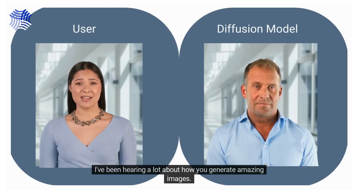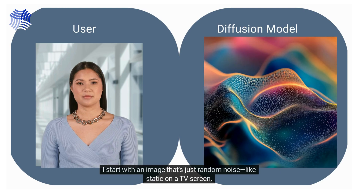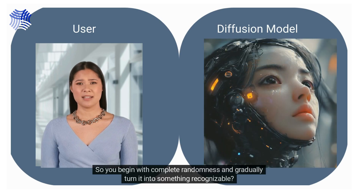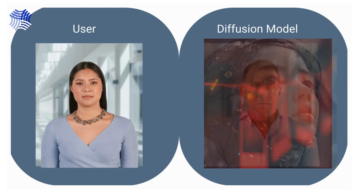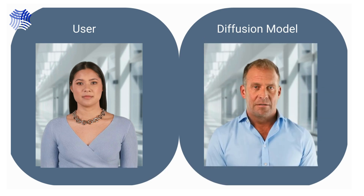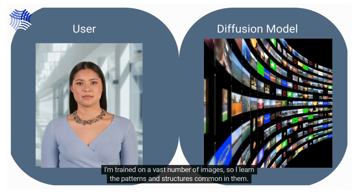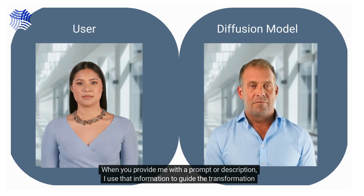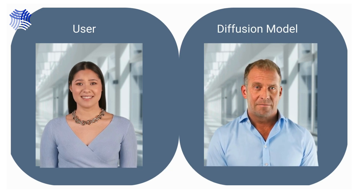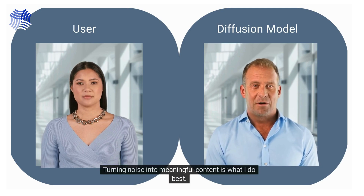User: 'I've been hearing a lot about how you generate amazing images. Can you explain how you work in simple terms?' Diffusion Model: 'I start with an image that's just random noise, like static on a TV screen. Then, step by step, I refine this noise to create a meaningful image.' User: 'So you begin with complete randomness and gradually turn it into something recognizable?' Model: 'Exactly. Think of it like developing a photograph in a dark room — the image slowly emerges from the initial blur as I process it through multiple stages.' User: 'How do you know what the final image should look like?' Model: 'I'm trained on a vast number of images, so I learn the patterns and structures common in them. When you provide me with a prompt or description, I use that information to guide the transformation from noise to the final image.' User: 'It's amazing how you can create detailed images from randomness.' Model: 'Thank you. Turning noise into meaningful content is what I do best.'